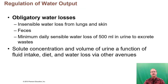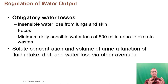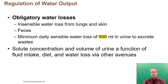Water output includes facultative water loss, which is adjustable, and obligatory water loss, which must happen no matter what. Obligatory losses come from insensible water loss through breathing and skin, which we can't control. We also have a minimum urine volume of about 500 milliliters required for the kidneys to work efficiently. If we're not consuming enough fluid to produce this volume, we'll have a buildup of metabolic waste products — uremia — which is a buildup of urea in the blood.